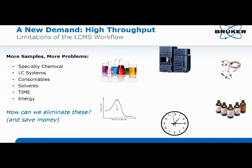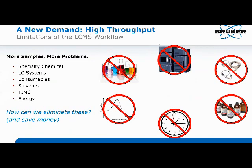But the workflow was very time-consuming. Each LC-MS run takes 20 minutes, plus replicate analysis, which greatly limits the number of samples that can be run in a given day. With the demand for high throughput, we want to re-evaluate this workflow — eliminate specialty chemicals, eliminate LC consumables and solvents, eliminate time and energy. In doing so, we can save lots of money. So going to high throughput at the same time saves money by eliminating all of those things.